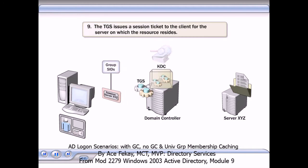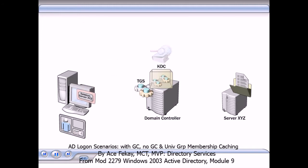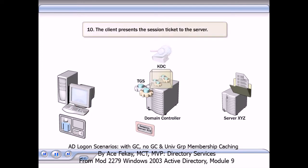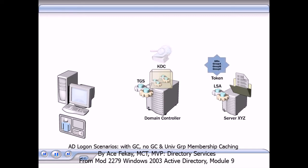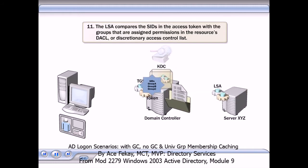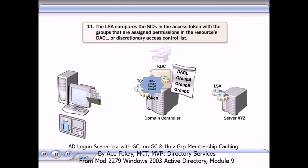The session ticket contains the SIDs for the user's group memberships. The client presents the session ticket to the server. The LSA, or Local Security Authority, on the server uses the information in the session ticket to create an access token. The LSA compares the SIDs in the access token with the groups that are assigned permissions in the resource's DACL, or Discretionary Access Control List. If they match, the user is granted access to the resource.